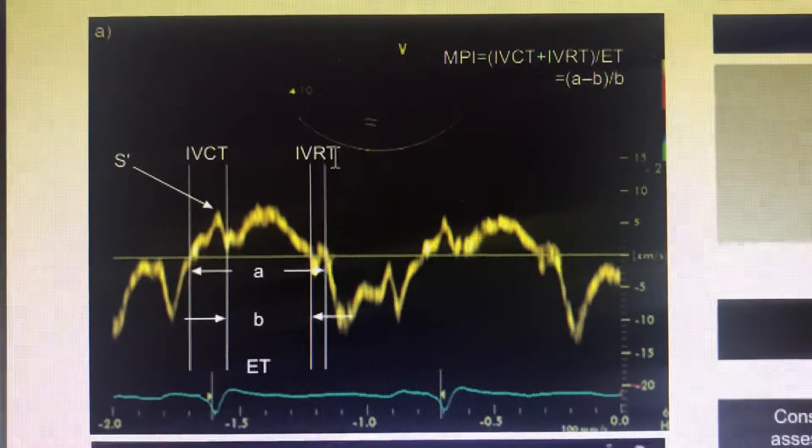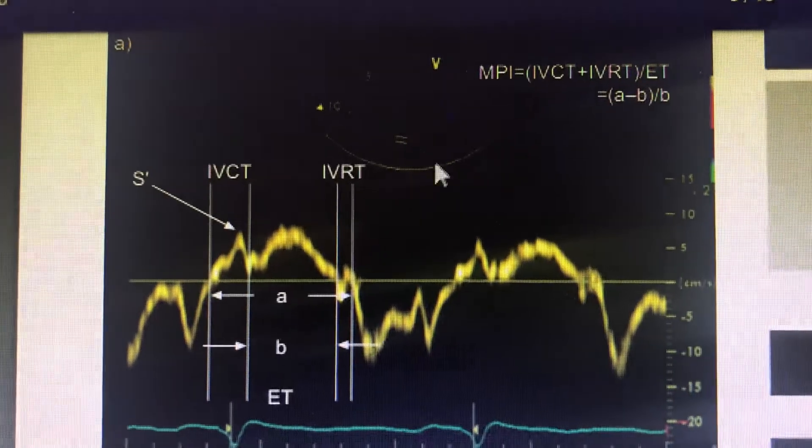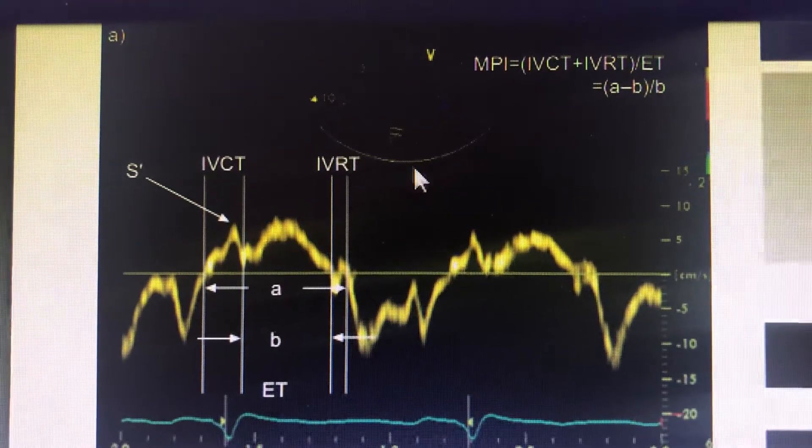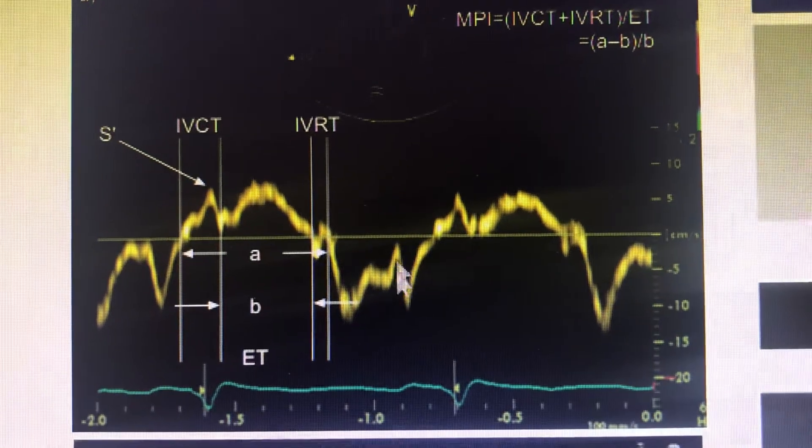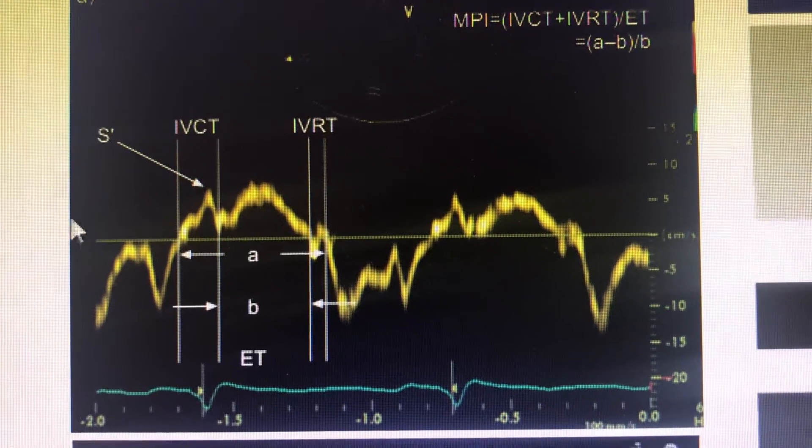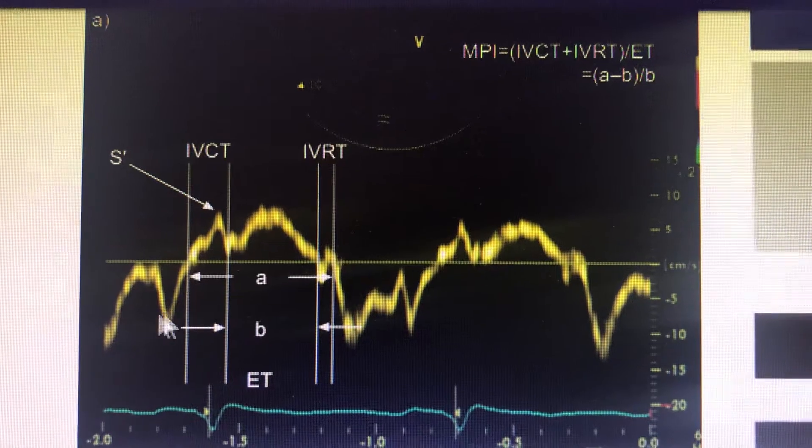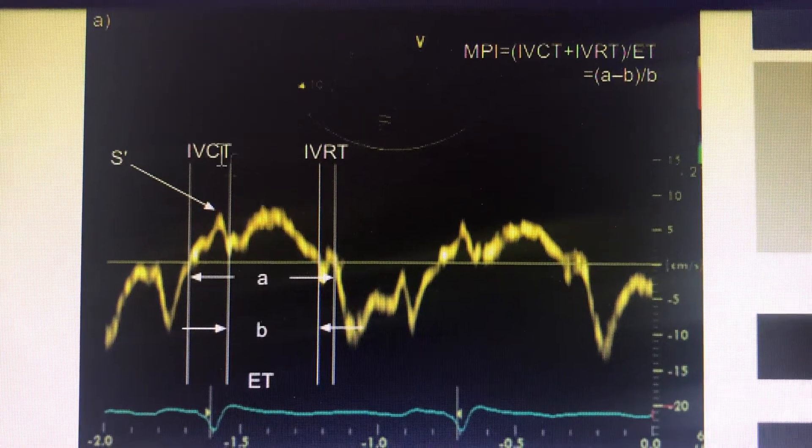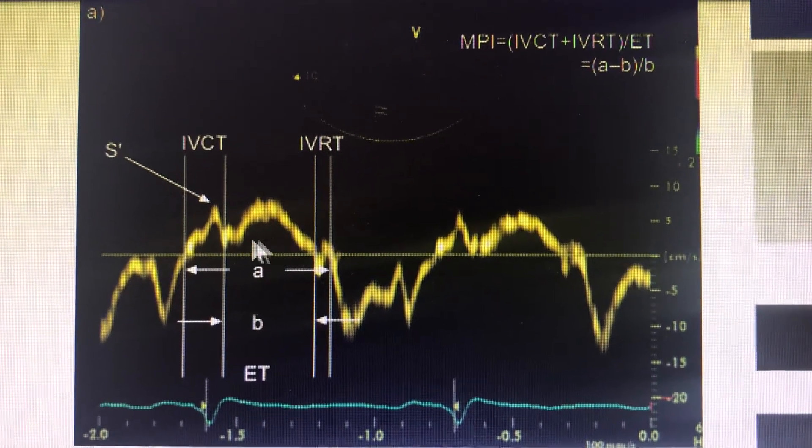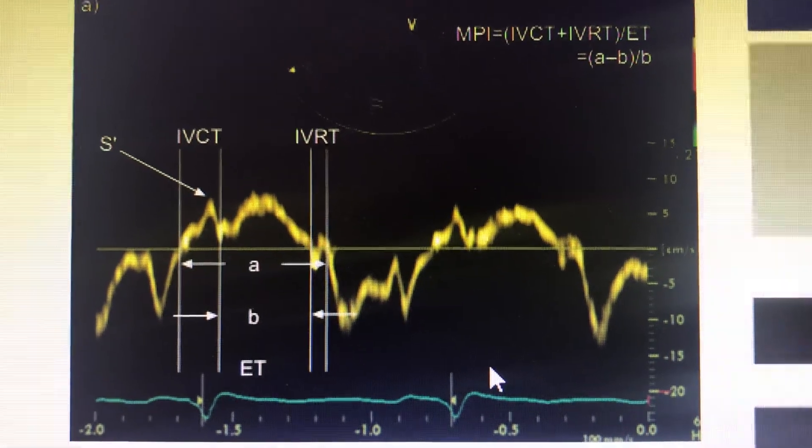You can obtain a tissue Doppler across the right free wall or pulse Doppler across the tricuspid valve to get this graph. The wave coming towards the probe is systole, and the one going away is diastole.